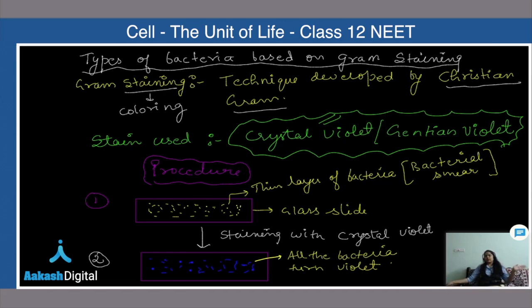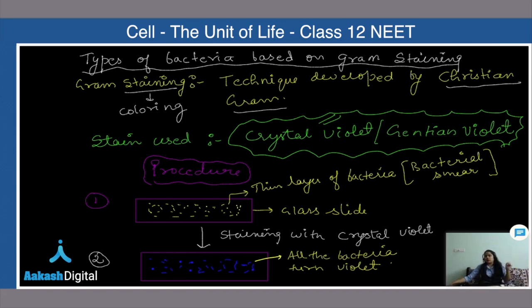We have taken our bacteria on the slide, we are staining it with crystal violet, and now all the bacteria turn violet. Now what is the further procedure? Write it down first and then we will continue.